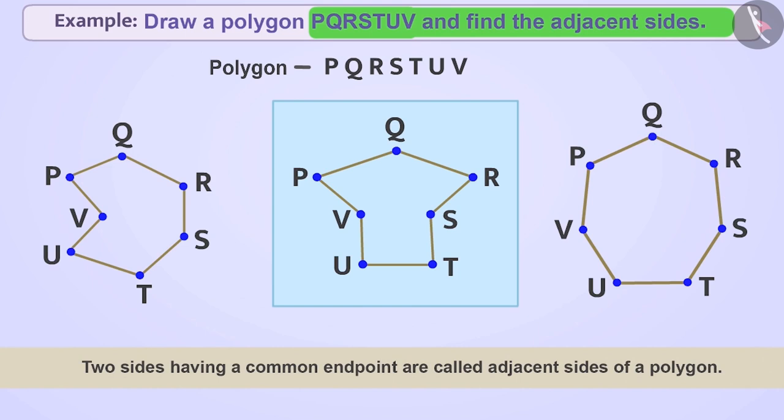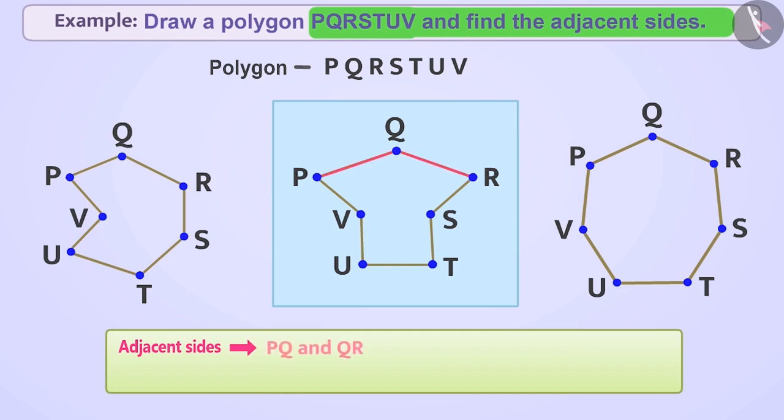In this way, adjacent sides in polygon PQRSTUV are PQ and QR, QR and RS, RS and ST, ST and TU, TU and UV, UV and VP and VP and PQ.